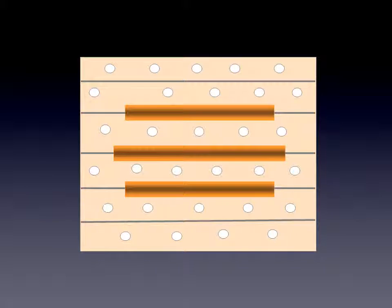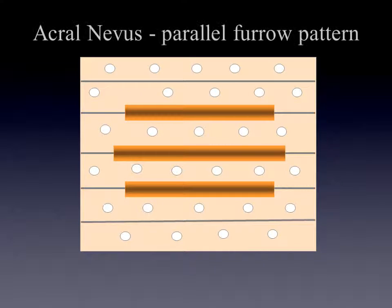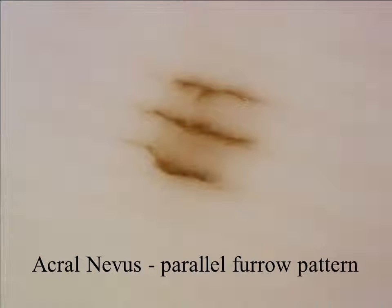If we have pigmentation, we look whether this pigmentation is in the furrows and if it is distributed in a parallel way. If this is the case, we have a stereotypical acral nevus with the so-called parallel furrow pattern. Here we see an acral nevus with the parallel furrow pattern.